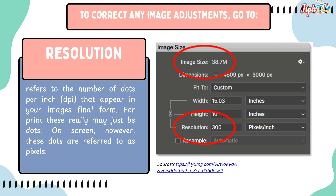Resolution refers to the number of dots per inch that appear in your image's final form. For print, these are dots; on screen, however, these dots are referred to as pixels.